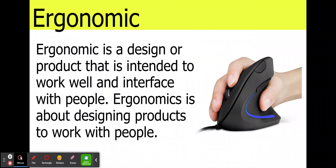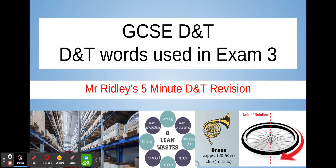Ergonomic. Ergonomic is a design or product that is intended to work well and interface with people. Ergonomics is about designing products to work with people. Here we can see an ergonomic design of a computer mouse. Thank you for watching Mr Ridley's five minute D&T revision.